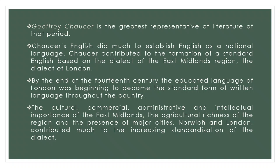By the end of the 14th century, the educated language of London — bolstered by the economic power of London itself — was beginning to become the standard form of written language throughout the country. The cultural, commercial, administrative, and intellectual importance of the East Midlands, the agricultural richness of the region, and the presence of major cities like Norwich and London contributed much to the increasing standardization of the dialect.